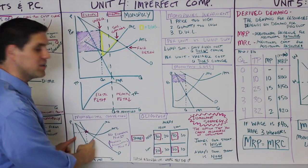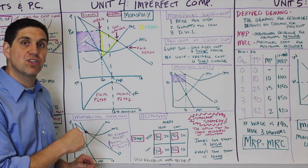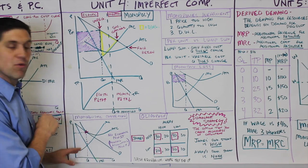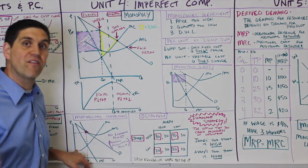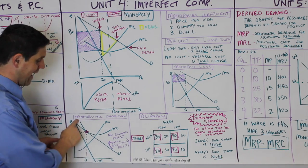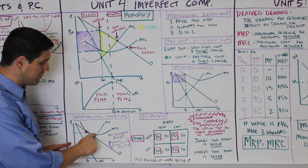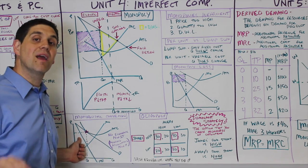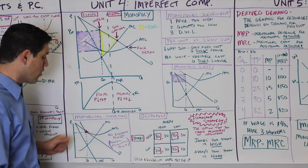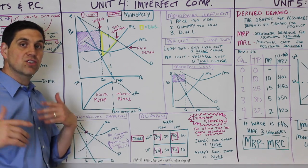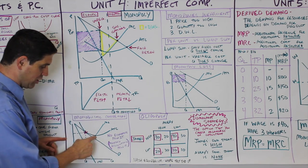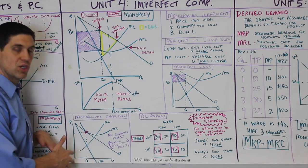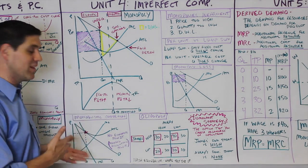The next graph is monopolistic competition — similar to perfect competition except it has a downward sloping demand and marginal revenue. Like perfect competition, there's no economic profit because of low barriers. The ATC goes down, hits a sweet spot, keeps going down, then goes back up, touching the demand curve at the production point — making no economic profit but positive accounting profit. There's deadweight loss and something called excess capacity, where they could produce at minimum ATC but don't.